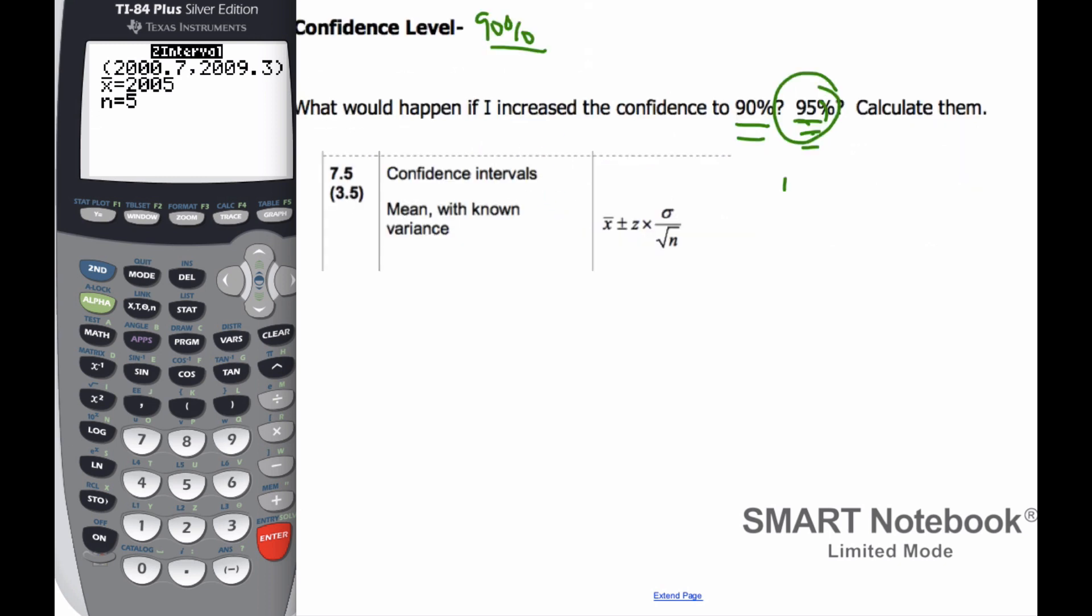Your only control that you have is N. If you make N bigger, which makes this calculation, is going to end up being smaller. And so you're going to have a smaller confidence interval.